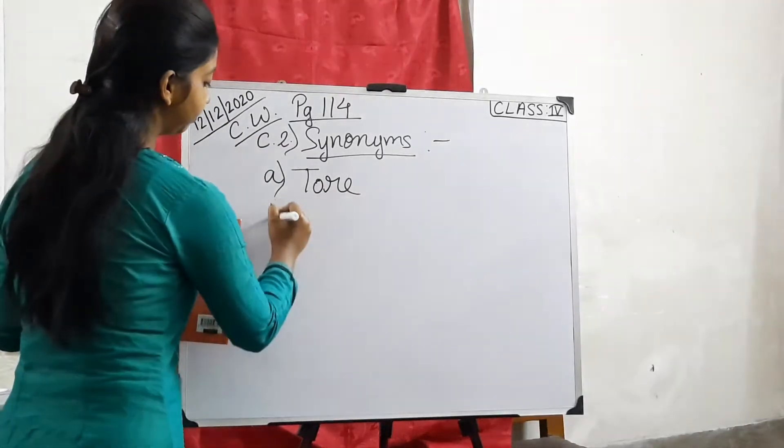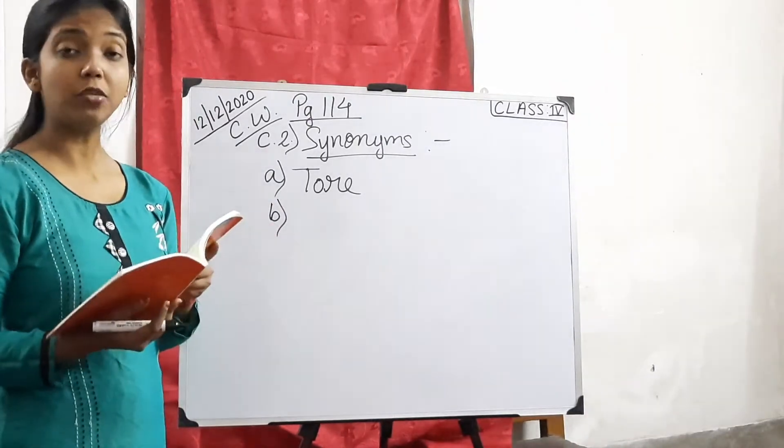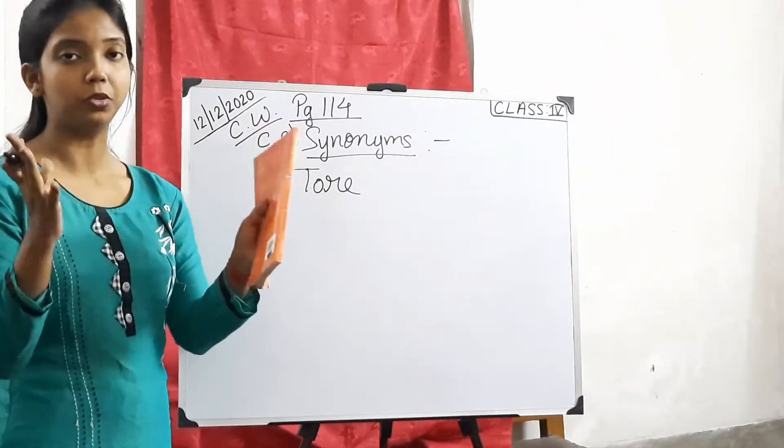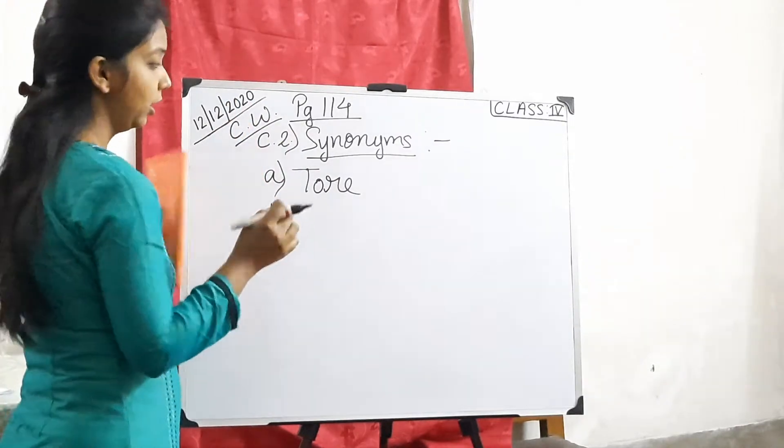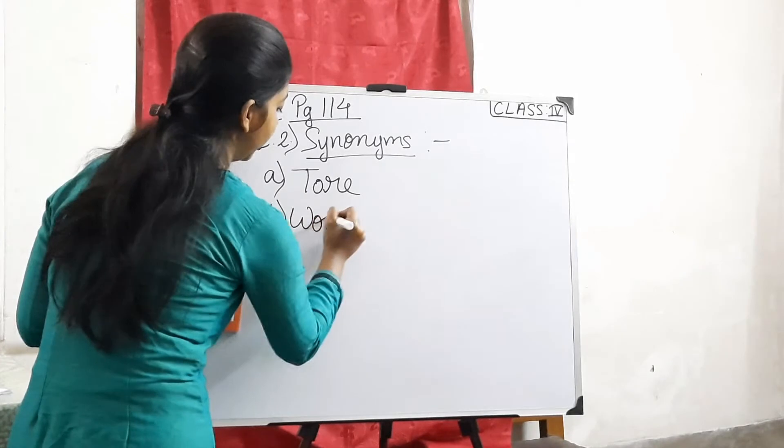Next, number B. The word is astonishing. Astonishing means wow, wonderful, wondrous. The word from your poem is wondrous.